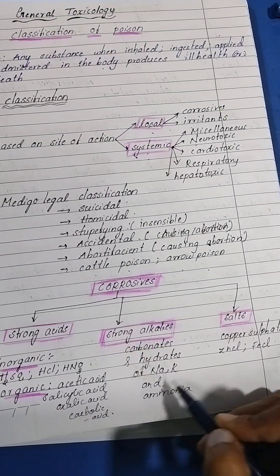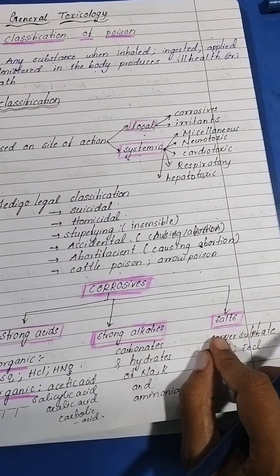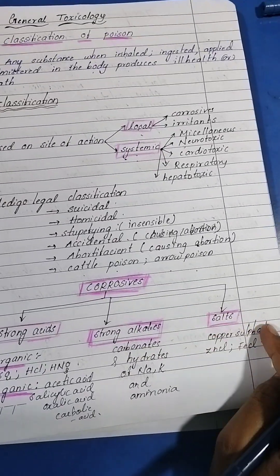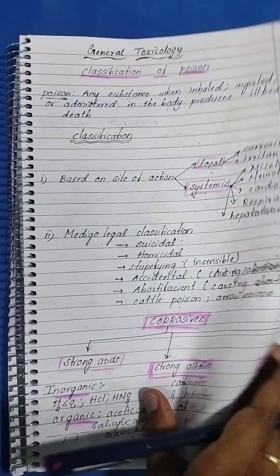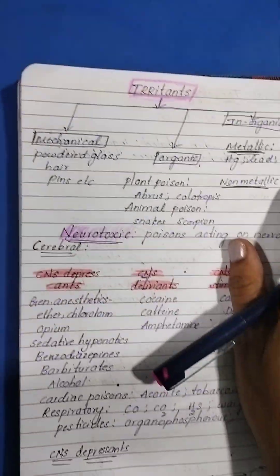Strong alkalis include carbonates and hydrates of sodium, potassium, and ammonia. In salts we have copper sulfate, zinc chloride, and iron chloride.